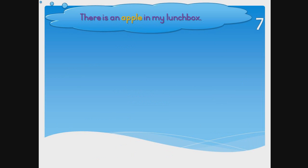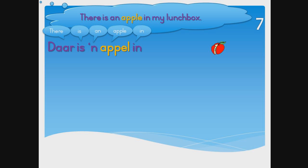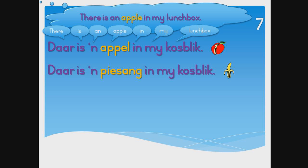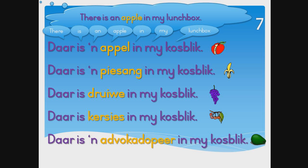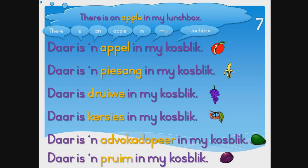Let's practice some sentences. In English we would say: There is an apple in my lunchbox. And in Afrikaans: Daar is 'n appel in my kosblik. Daar is 'n appel in my kosblik. Daar is 'n pisang in my kosblik. Daar is druiwe in my kosblik. Daar is kersies in my kosblik. Daar is 'n avokado-peer in my kosblik. Daar is 'n pruim in my kosblik.